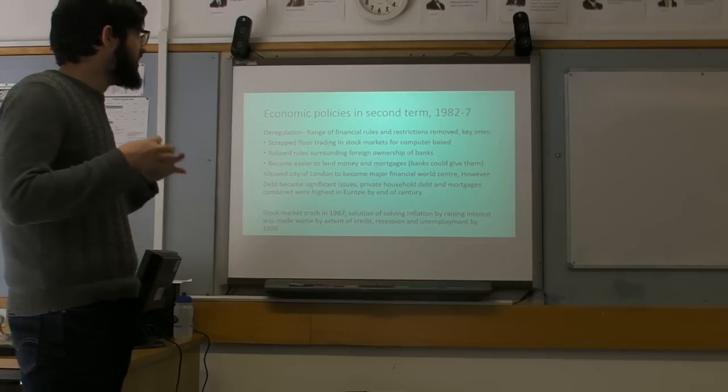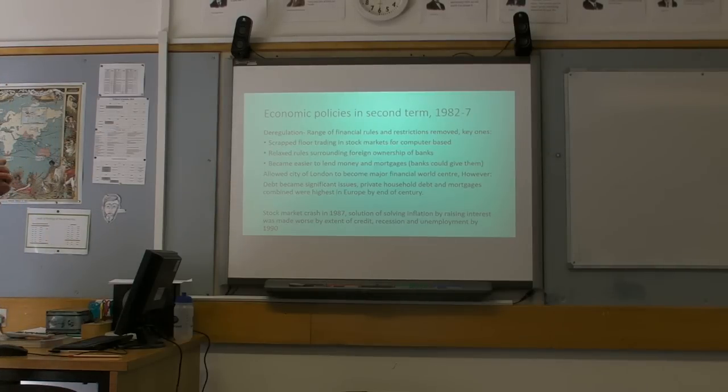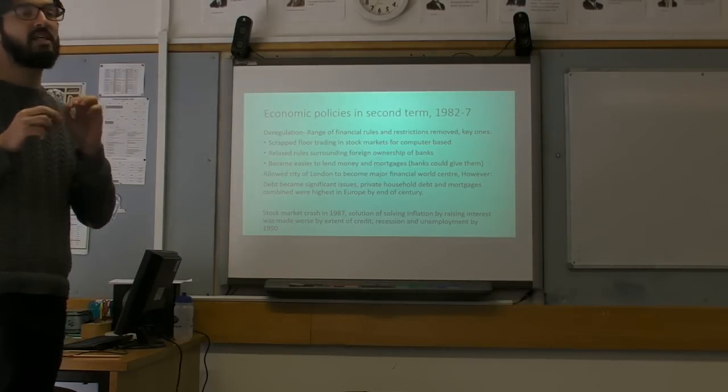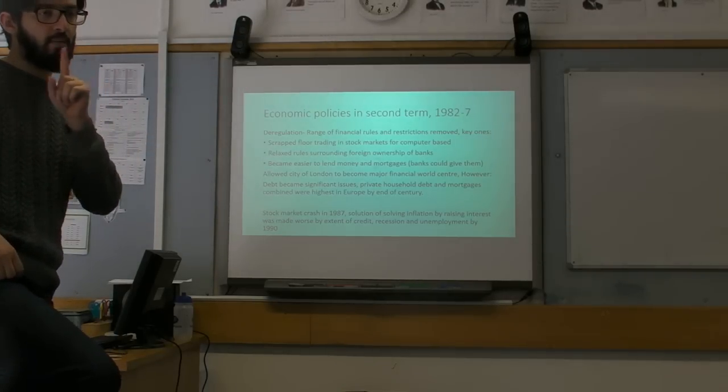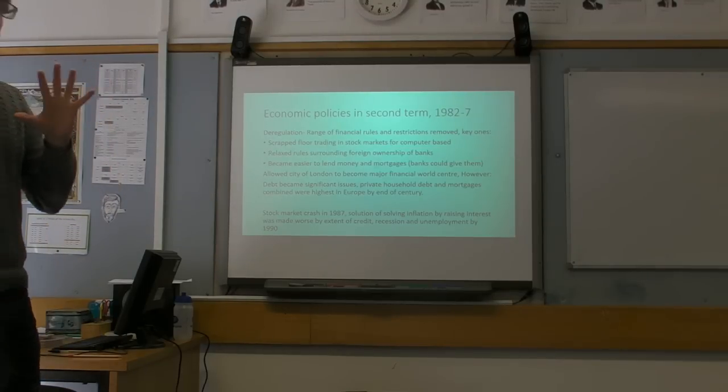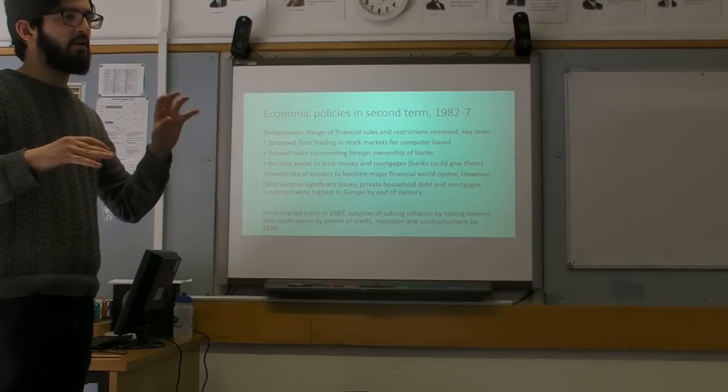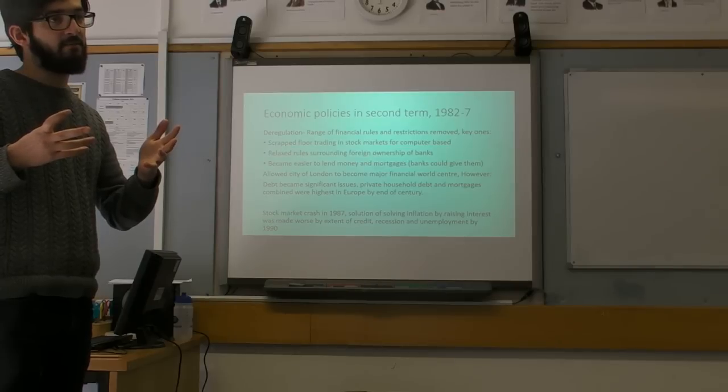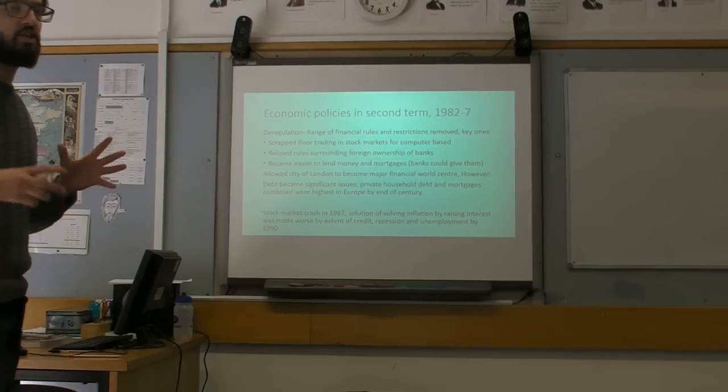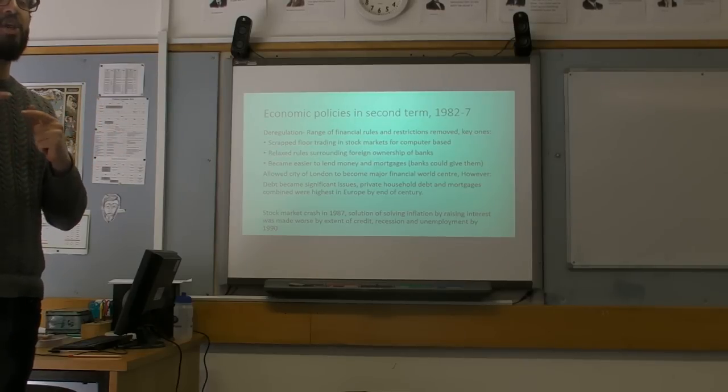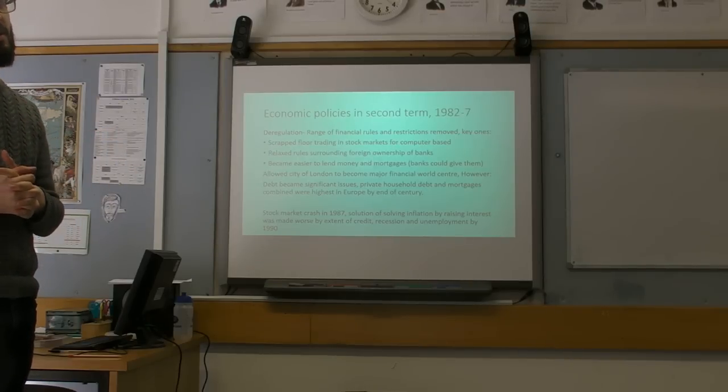Additionally, she relaxes the rules surrounding the foreign ownership of banks. It becomes easier for foreign companies to take over and own British banks. It becomes easier to lend money and also mortgages. They relax rules surrounding consumer credit. There is historically a significant difference between banks and building societies. Prior to this act being passed, to get a mortgage, you had to go to a building society. Only building societies like Nationwide could give mortgages. Banks could not give mortgages.